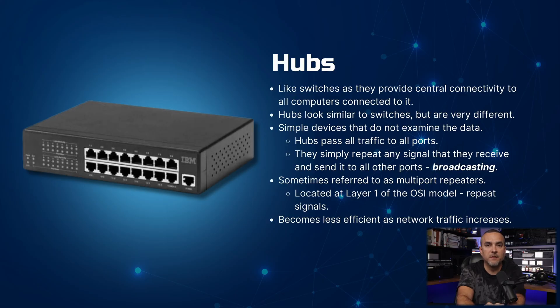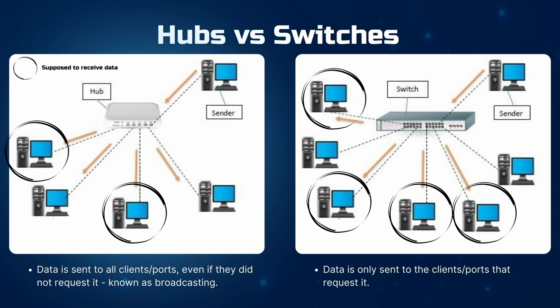Switches and hubs are networking devices that play different roles. Switches act as a central connectivity point ensuring efficient data transmission by directing traffic only to the intended computer. Hubs, also called multi-port repeaters, operate at Layer 1 of the OSI model and simply repeat any received signal to all ports — a process known as broadcasting. If a hub has five computers connected and one sends data, the hub broadcasts it to all connected devices, even those not involved in the exchange. A switch, by contrast, only delivers data to the computers that need it.